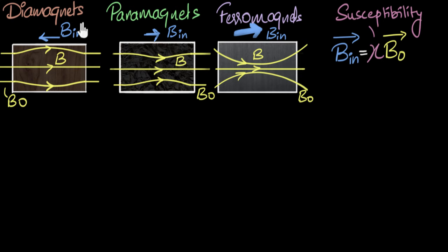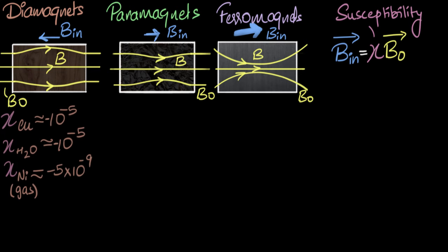For diamagnets: the induced field is very tiny compared to the external field, so we'd expect a very small value. And since the induced field is in the opposite direction to the external field, the susceptibility should be negative. Indeed, copper and water have susceptibility of about −10⁻⁵. Nitrogen gas has an even smaller value — mainly because it's a gas, so fewer atoms means less induction and a smaller induced field.